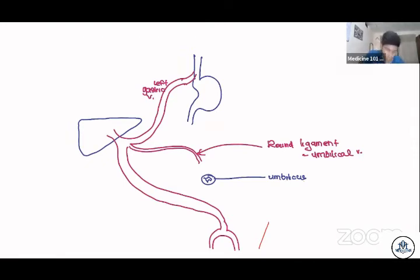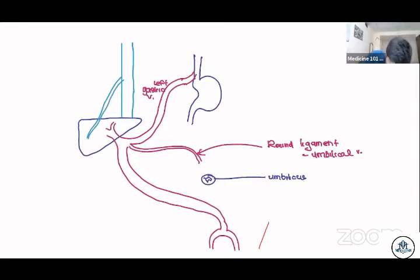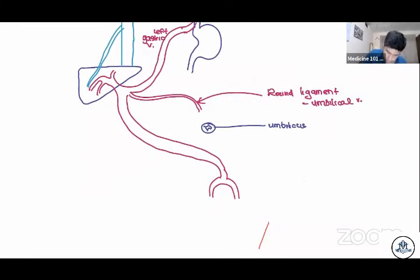These are the most important portal vessels. Now let's draw the systemic vessels. Draw a branch adjacent to each other but not touching. This is the superior rectal vein.